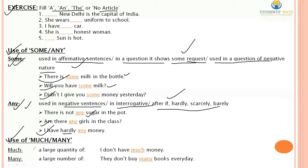Next, use of 'much' and 'many'. 'Much' is used to express large quantity (matra — uncountable). 'Many' is used for a large number (sankhya — countable). For example: 'I don't have much money' — money is uncountable, so 'much' is used. 'They don't buy many books everyday' — books are countable, so 'many' is used.